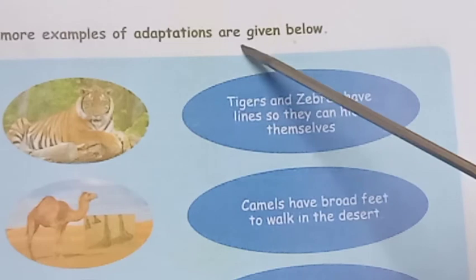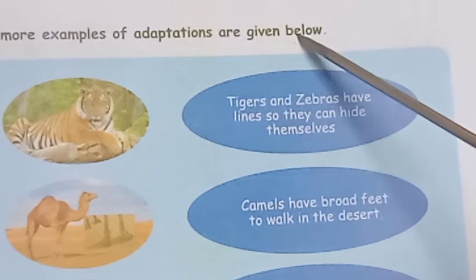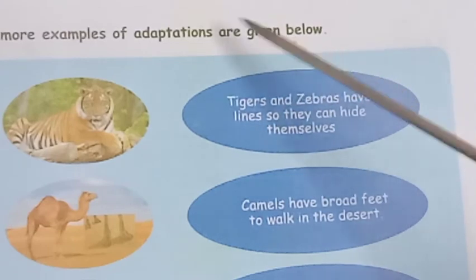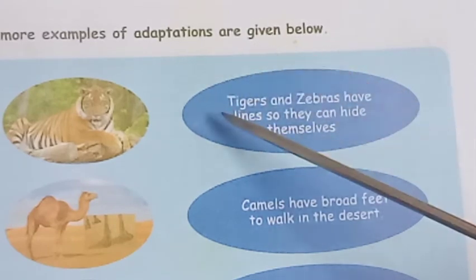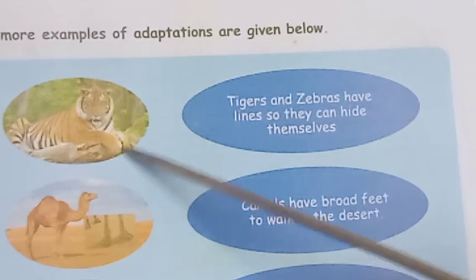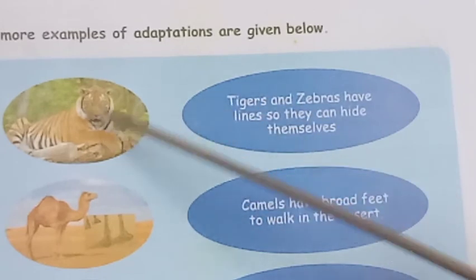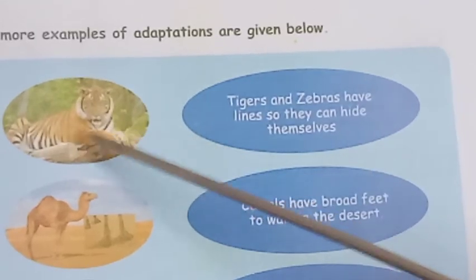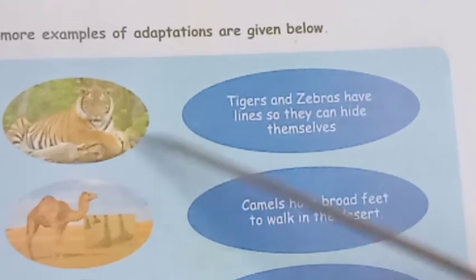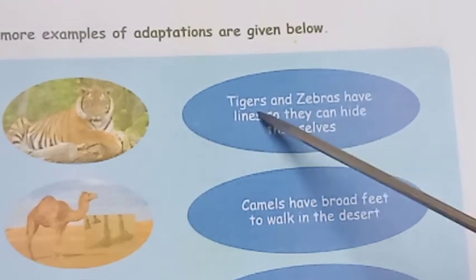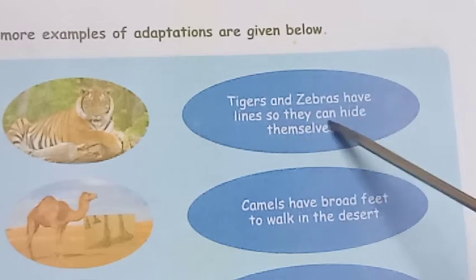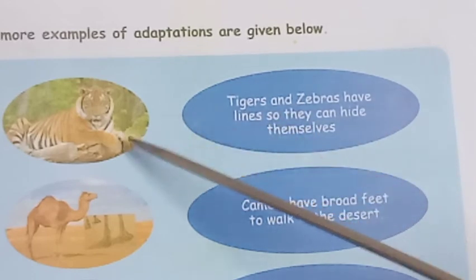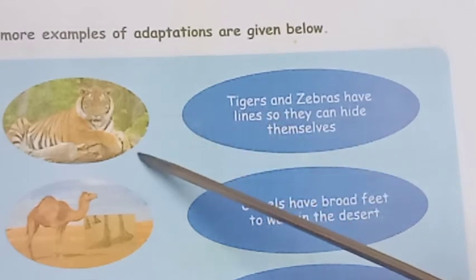Examples of adaptations: Camouflage — tigers and zebras have stripes so they can hide themselves from predators or prey in their environment.